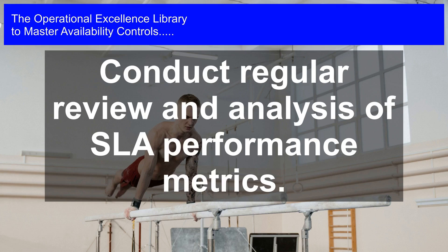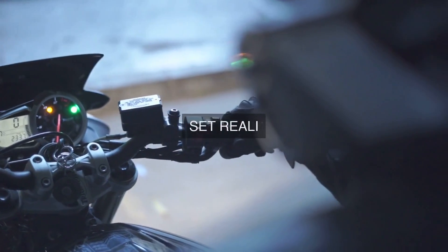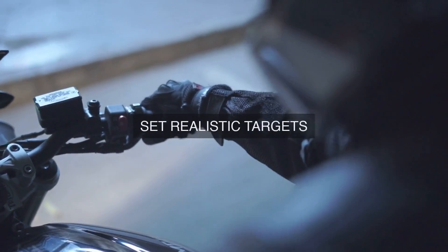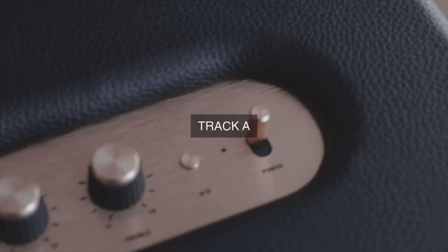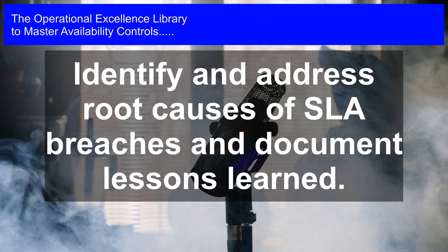Implement a continuous improvement process that encourages operational teams to identify areas for improvement and develop action plans to address them. This process should include root cause analysis (RCA) to identify underlying causes of SLA performance issues, development of corrective action plans, and implementation of changes with monitoring of their effectiveness.